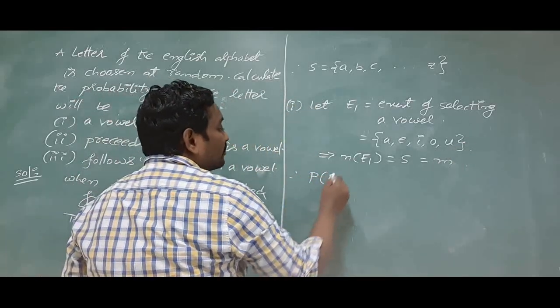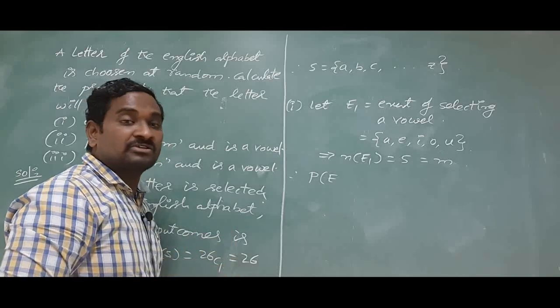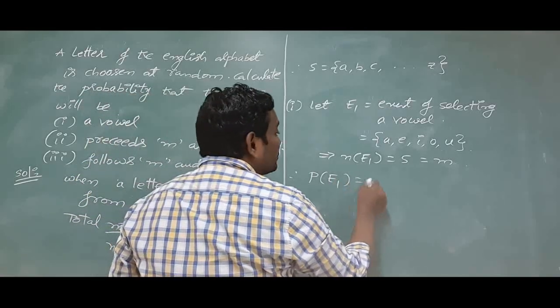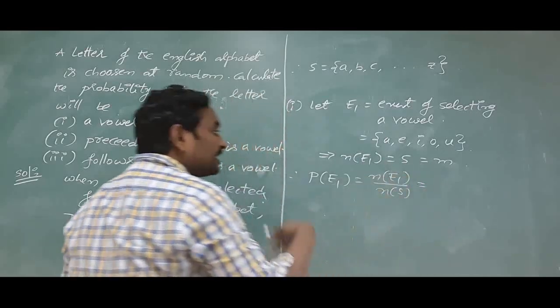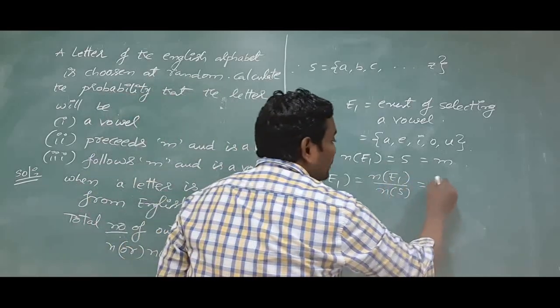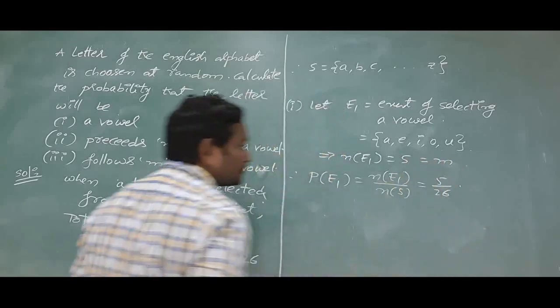From the definition of basic probability, otherwise classic definition of probability, you will get probability of E1 is equal to N of E1 by N of S. Otherwise simply you can write as M by N. So it would be 5 by 26.